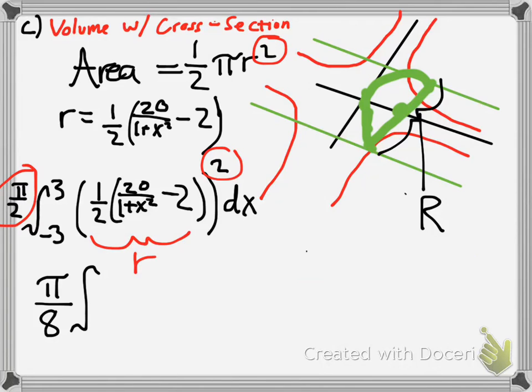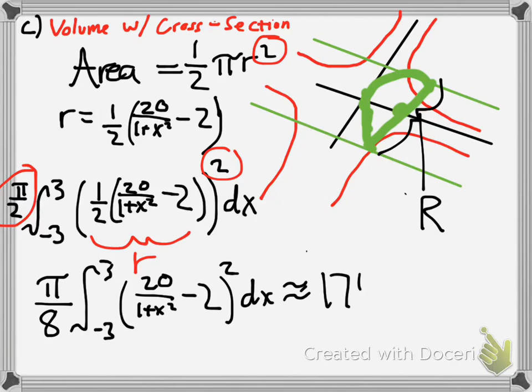So, we get pi over 8 because 1 half squared is 1 fourth times pi over 2. So, it's like 1 half times 1 fourth is 1 eighth, and then pi is in the numerator. And, then, that's just simplified, and you would get approximately 174.268 for your answer.